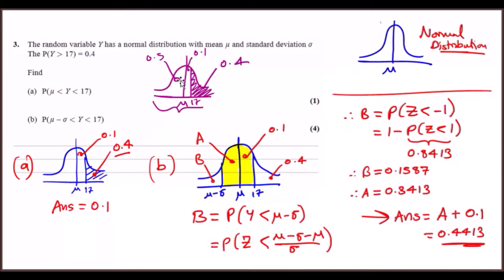This is something we just need to know off the bat, and this will be helpful for solving every problem. Now part (a): find the probability that Y is between the mean and 17. So that's literally this small region here, which is 0.1. We've already solved this one.